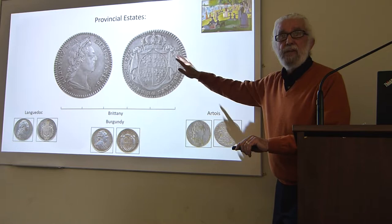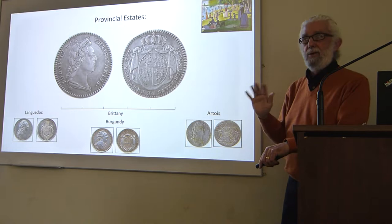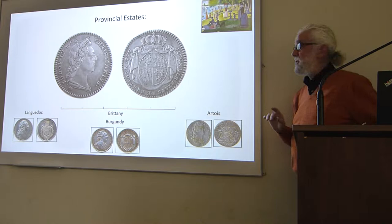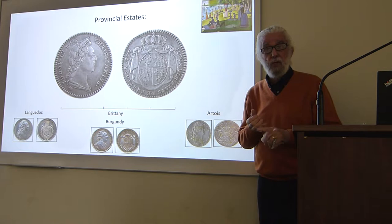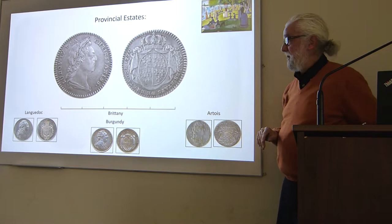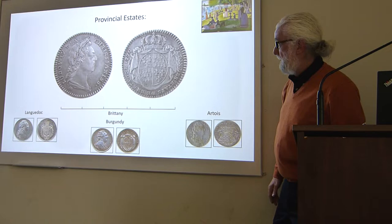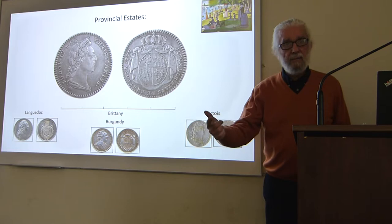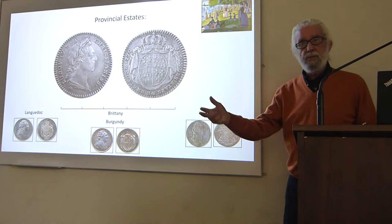Now we move out to provincial estates. France is not a country or a nation through the end of the 18th century — it's an agglomeration of various different little provinces. Some of the outlying provinces had this institution called the estates: a union of the three estates of the province — the clergy, the nobility, and the third estate — with prerogatives in terms of taxation and collecting monies. They struck their jetons regularly. Here's a very nice one from 1770 of Brittany, Burgundy, Languedoc, the Artois. Not every province strikes them, but many do, performing the same accounting functions, perks of office, attendance, and New Year's distributions.